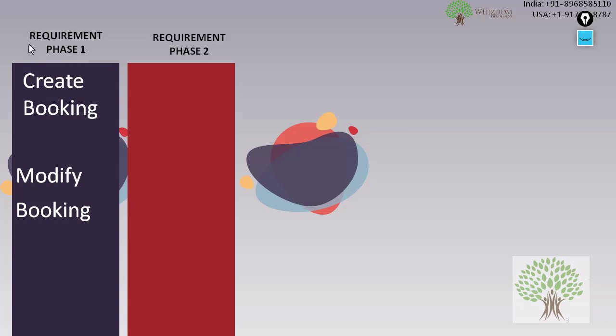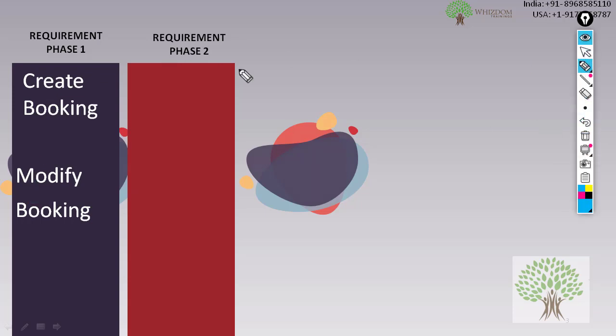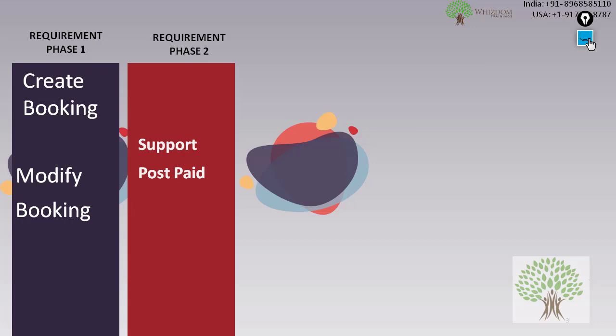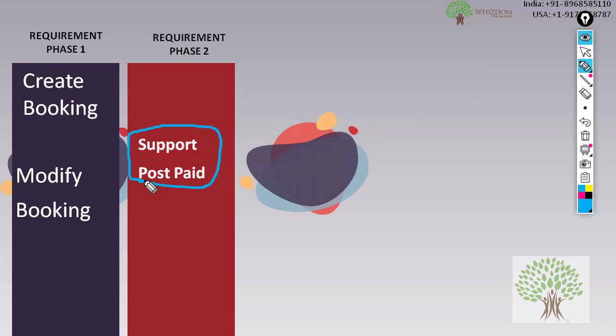You think that you know Selenium and you simply build scripts and deliver them to the client. The problem starts after that. Maybe after one month, the client comes up with the second phase of requirements in which he says: please modify the scripts to support post-paid bookings.